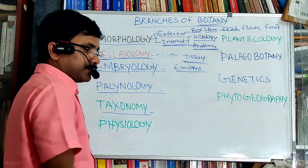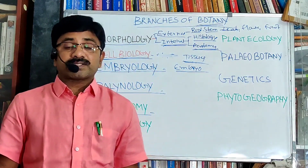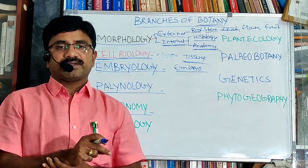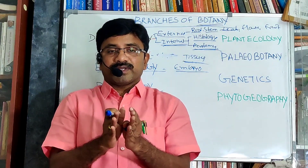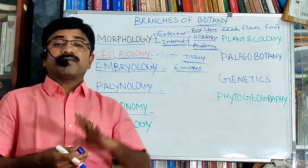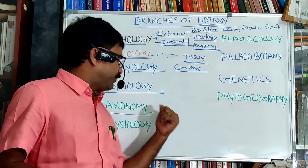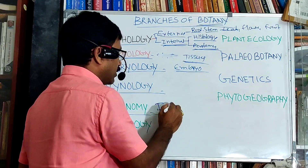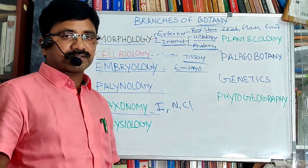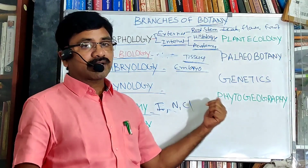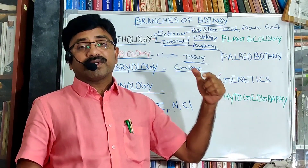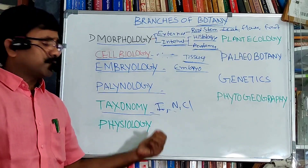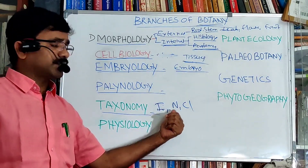The next is taxonomy. You know, more than five lakh species of plants are living on this earth, so to make it convenient to study, plants are divided into various groups. The branch of botany that deals with identification, nomenclature, and classification of plants, using information obtained from various fields of botany, is known as taxonomy.